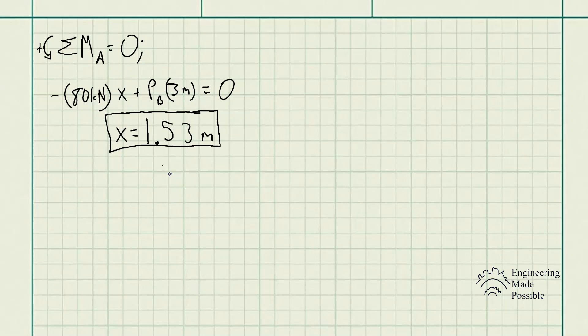Now we solved for X, the location where that 80 kilonewtons should be located. The second question asks: what was the new diameter of cylinder A? In this case, we have the force in cylinder A, so we have the deformation.